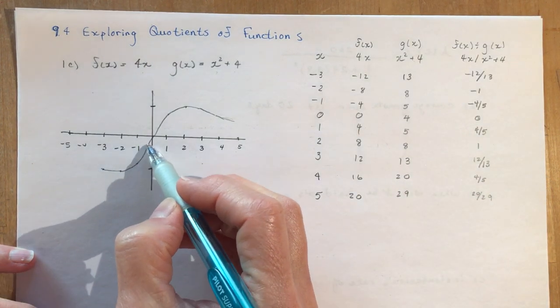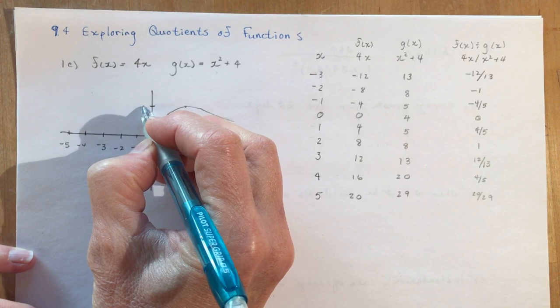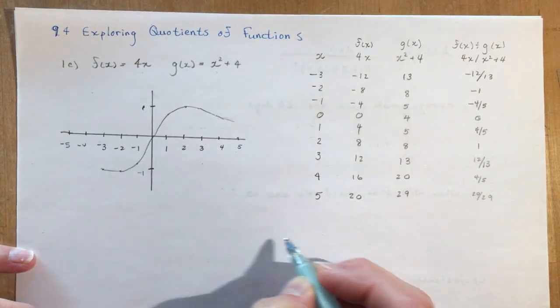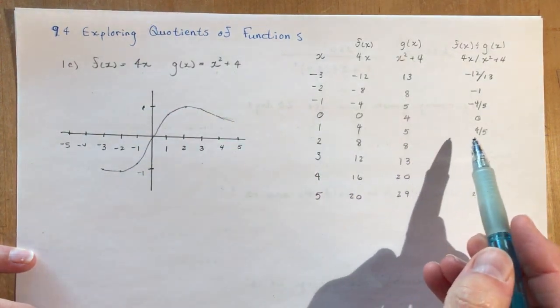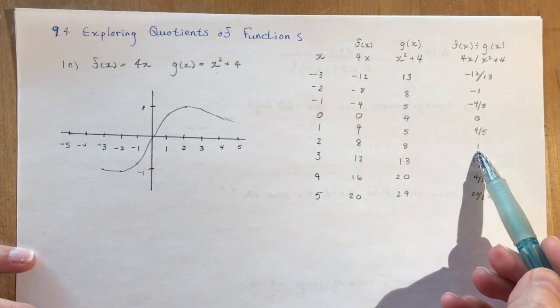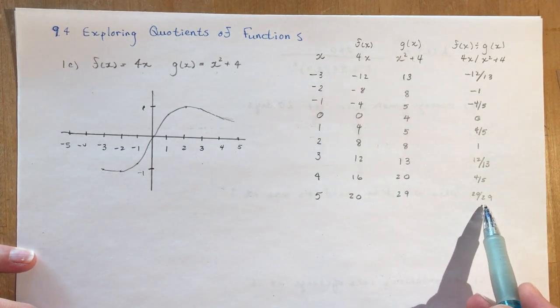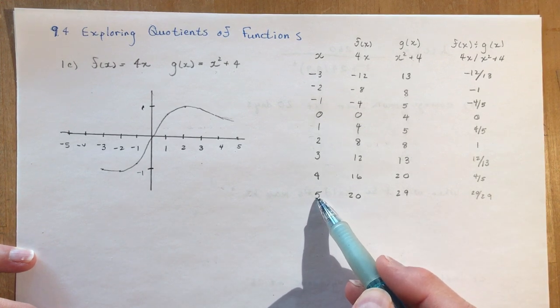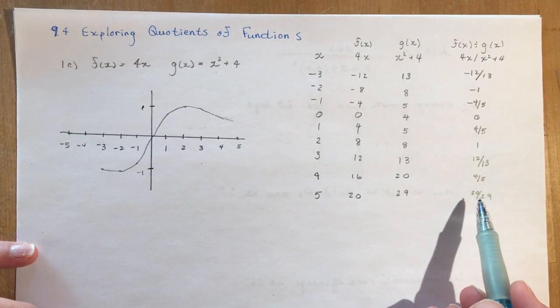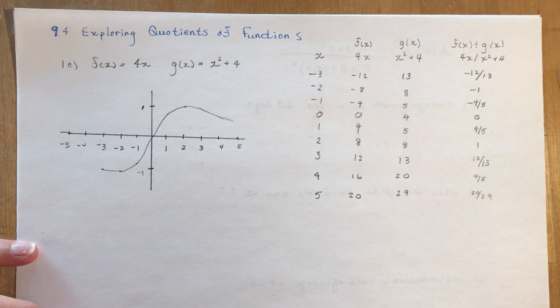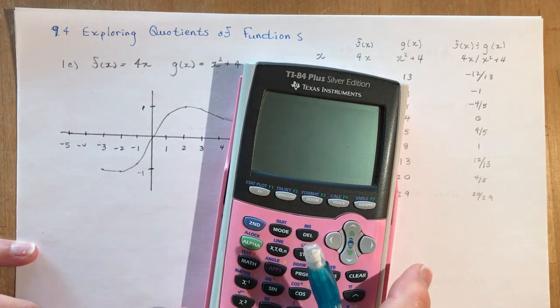So minus 12 over 13, minus 8 over 8, minus 4 over 5, et cetera. You end up with this really pretty little graph like this. It only goes up to 1 and minus 1—those are your max and minimum values that you see here and here. If you look at what's happening here, you can see it's coming down as I go out. At 5 I got 20 over 29.